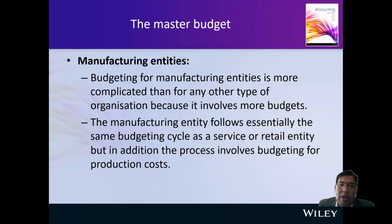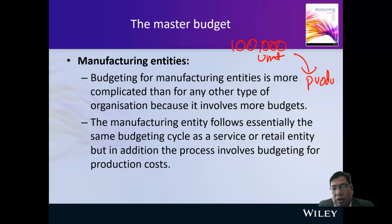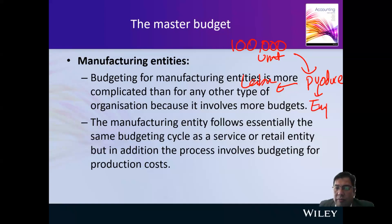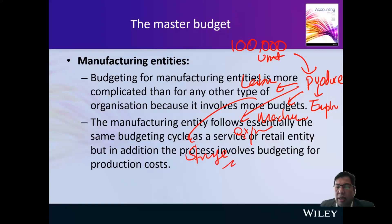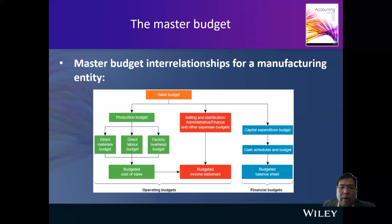For example, if you want to sell 100,000 units, you must determine how much to produce. When you manufacture, you're talking about direct labor, employee hours, machines, additional expenses for storage — so many things are interconnected with the production cycle. This is the complexity of the manufacturing entity, but don't worry, it's going to be easy.